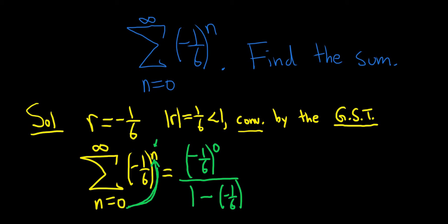So again, you just take this number, plug it in, and on the bottom, it's always one minus r. Negative one-sixth to the zero is one.